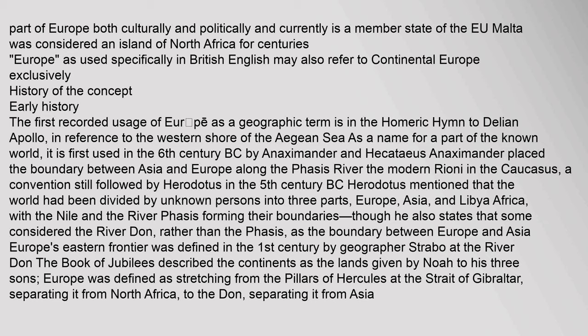History of the concept — Early history: The first recorded usage of Europe as a geographic term is in the Homeric Hymn to Delian Apollo, in reference to the western shore of the Aegean Sea. As a name for a part of the known world, it is first used in the 6th century BC by Anaximander and Hecataeus. Anaximander placed the boundary between Asia and Europe along the Phasis River in the Caucasus, a convention still followed by Herodotus in the 5th century BC. Herodotus mentioned that the world had been divided into three parts — Europe, Asia, and Libya (Africa) — with the Nile and the river Phasis forming their boundaries. Europe's eastern frontier was defined in the 1st century by geographer Strabo at the River Don. Europe was defined as stretching from the Pillars of Hercules at the Strait of Gibraltar to the Don, separating it from Asia.